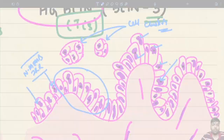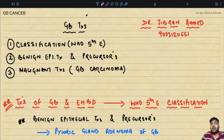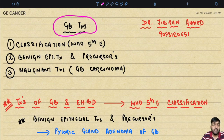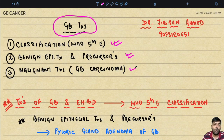Dr. Gibran Ahmad presents to you Simply Pathology, and today we are back with part two of gallbladder disorders. In this lecture we are going to discuss in detail about the tumors arising from the gallbladder. We will discuss the classification of tumors arising from the gallbladder and extrahepatic biliary tract according to the latest fifth edition of the WHO, the benign epithelial tumors and precursors, and finally the malignant tumors — mainly gallbladder carcinoma.